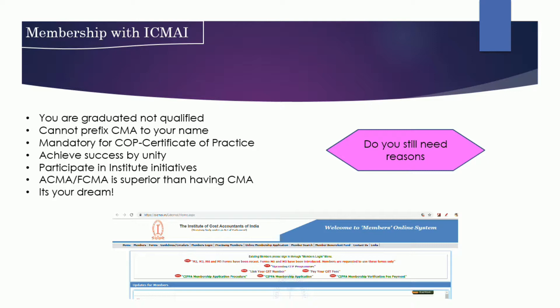If you have qualified your Cost and Management Accounting and are affixing CMA to your name, you should ensure that you have practical experience and enroll as an associate member with the institute. You cannot prefix CMA to your name just after you qualify — ensure you are a member first, then you prefix the CMA designation to your name.